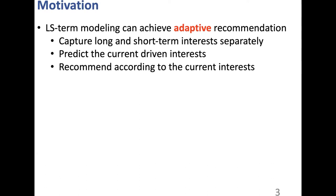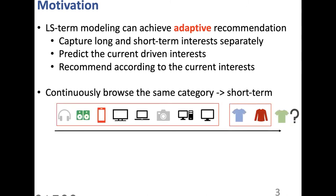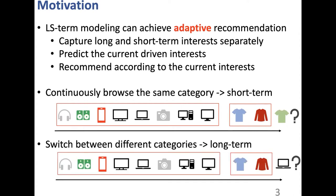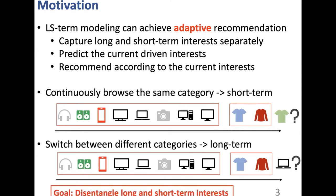Then we predict the current interest of the given user, and recommend according to that current interest. For example, when users continuously browse the same category, the short-term interest may be dominant. When users switch between different categories, the long-term interest might be more important. So our goal in this work is to disentangle long- and short-term interest.